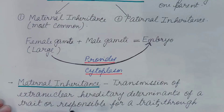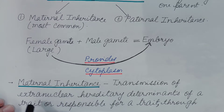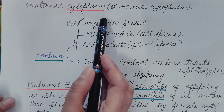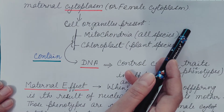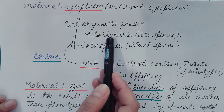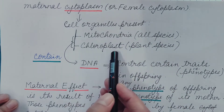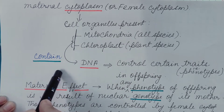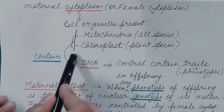This is known as maternal inheritance. Transmission of extra nuclear heredity determinants — extra nuclear meaning not in the nucleus but present in the cytoplasm — through maternal or female cytoplasm. In the cytoplasm, cell organelles are also present. Among them, two are the most important: mitochondria, which is present in all species, and chloroplasts. These contain their own DNA, known as mitochondrial DNA and chloroplast DNA.